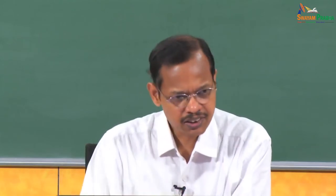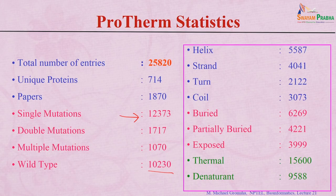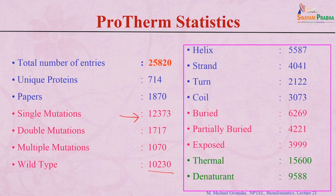Looking at secondary structure distribution, most mutations are in helix, followed by strand, with sufficient numbers in turn and coil regions — useful for comparing stability factors across different secondary structure types. For accessibility, about 6,000 are buried, and about 4,000 are in partially buried and exposed regions. About 15,000 entries use thermal denaturation and about 9,600 use chemical denaturation.